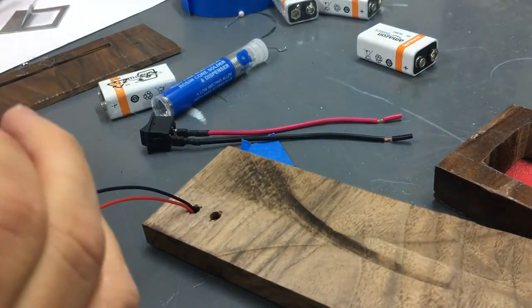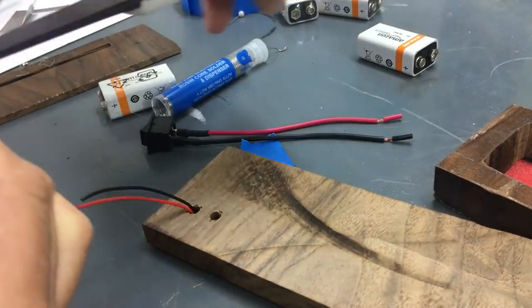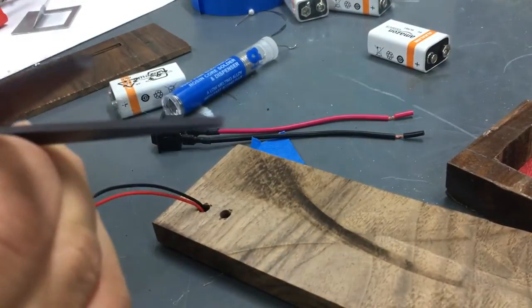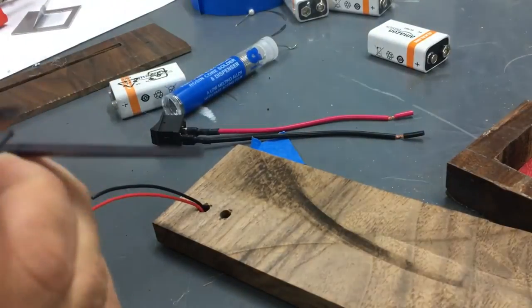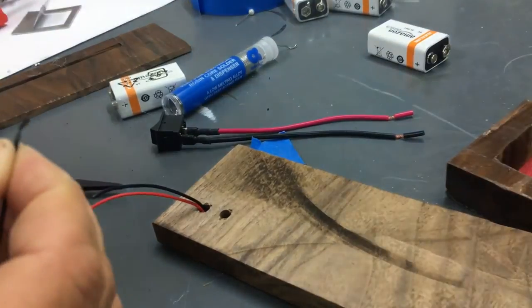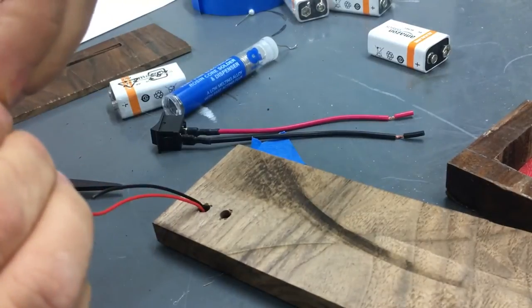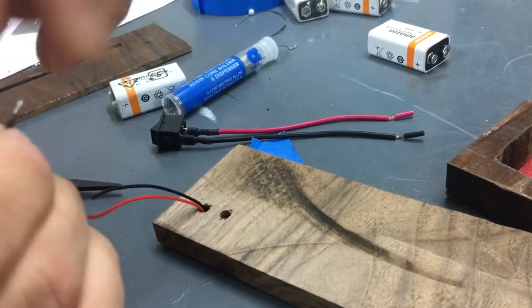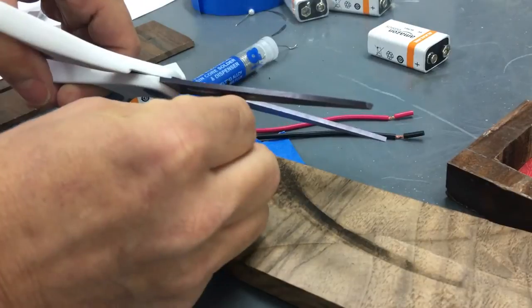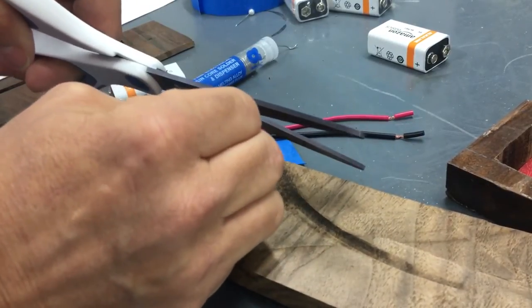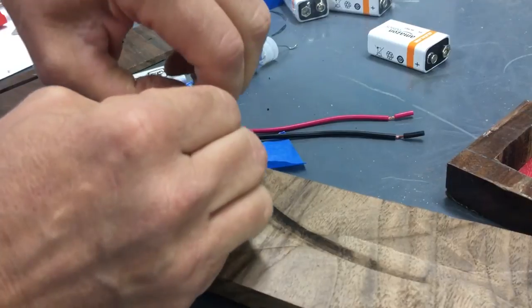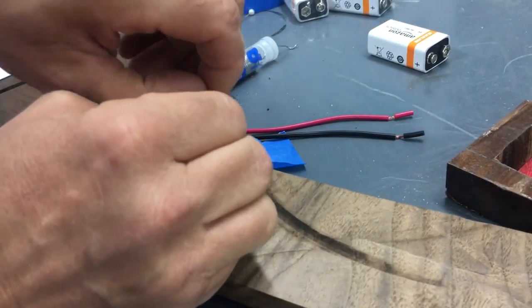There's actually wire strippers that make it nice but I can't find them. I'm going very light because I don't want to cut the wires. Twist it. You have to do both sides. This one's going a little easier. Much easier with the wire strippers.